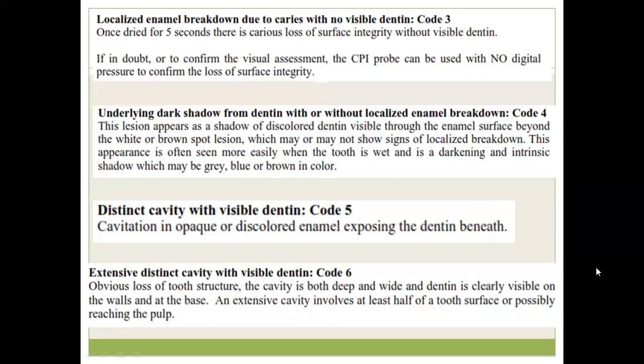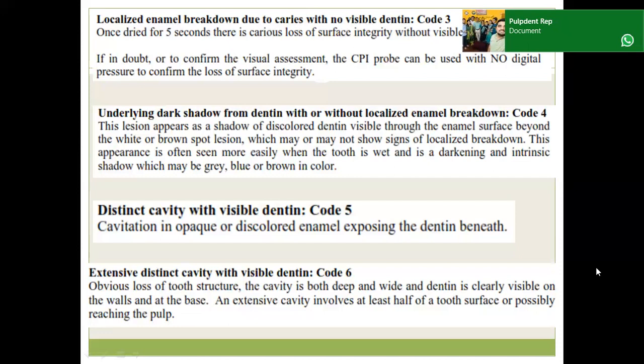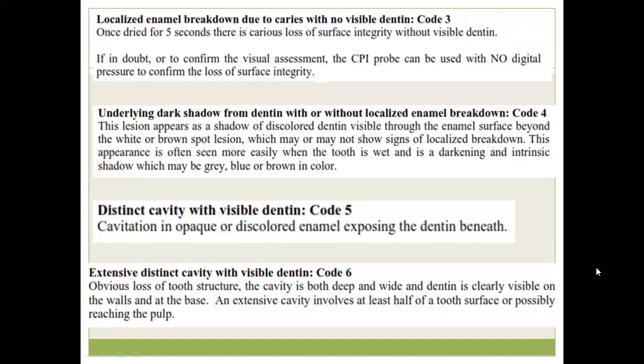Code 3 is localized enamel breakdown. After air-drying for 5 seconds, you can see the change in translucency or opacity surrounding the micro-cavitation, and the integrity of the surface is lost — it will be rough and you cannot feel a smooth surface when probed with the CPI probe. Code 4 is the underlying dark shadow — you can see discolored dentin through the translucent enamel. It may not show localized breakdown, but we can appreciate the darkening in the form of gray, blue, or brown color.